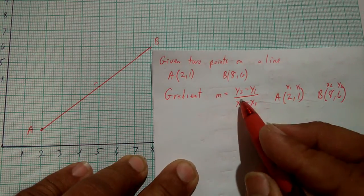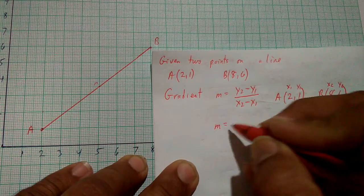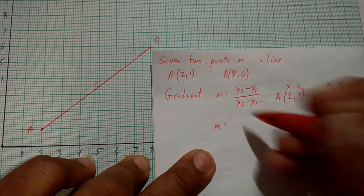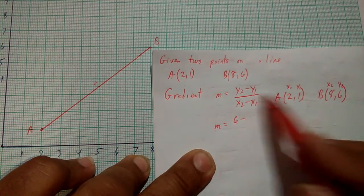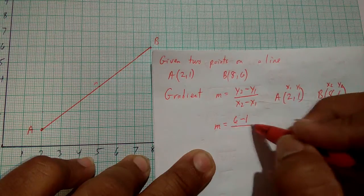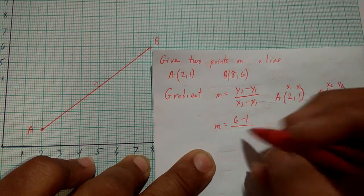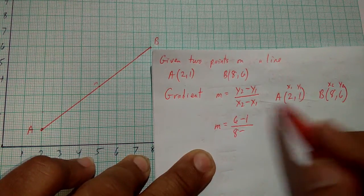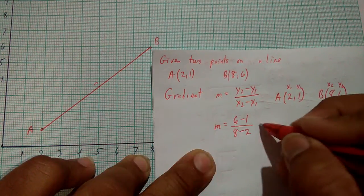Substituting into this equation, we end up with m equals y2, which is in this case 6, minus y1, which is 1, over x2, which is 8, minus x1, which is 2.